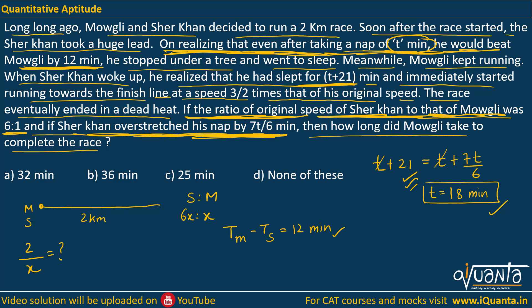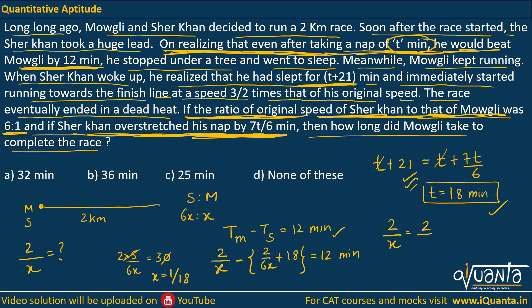Time taken by Mowgli is 2/x for the 2km race. Time taken by Sher Khan at usual speed is 2/(6x), plus he slept for 18 minutes. The difference should equal 12 minutes. Solving: 2/x minus 2/(6x) minus 18 = 12, which gives 2 × (5/6x) = 30. So 3x = 1/18, meaning x = 1/18. Therefore, Mowgli's time = 2/x = 2 ÷ (1/18) = 36 minutes.